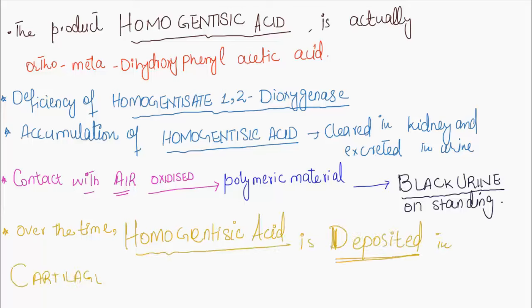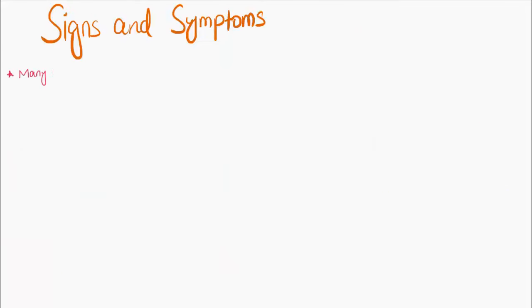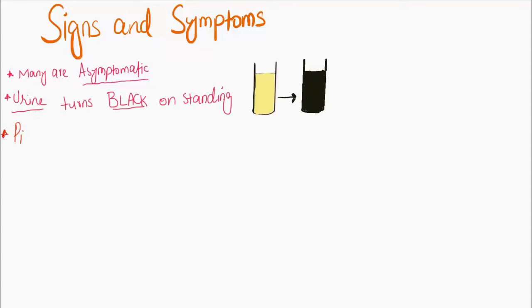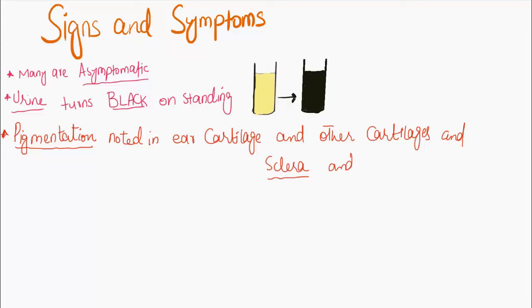Signs and symptoms: Many patients with alkaptonuria are asymptomatic as children or young adults. Urine turns black on standing in open air. Pigmentation is noted in ear cartilage and other cartilages, sclera, and corneal limbus of the eye.